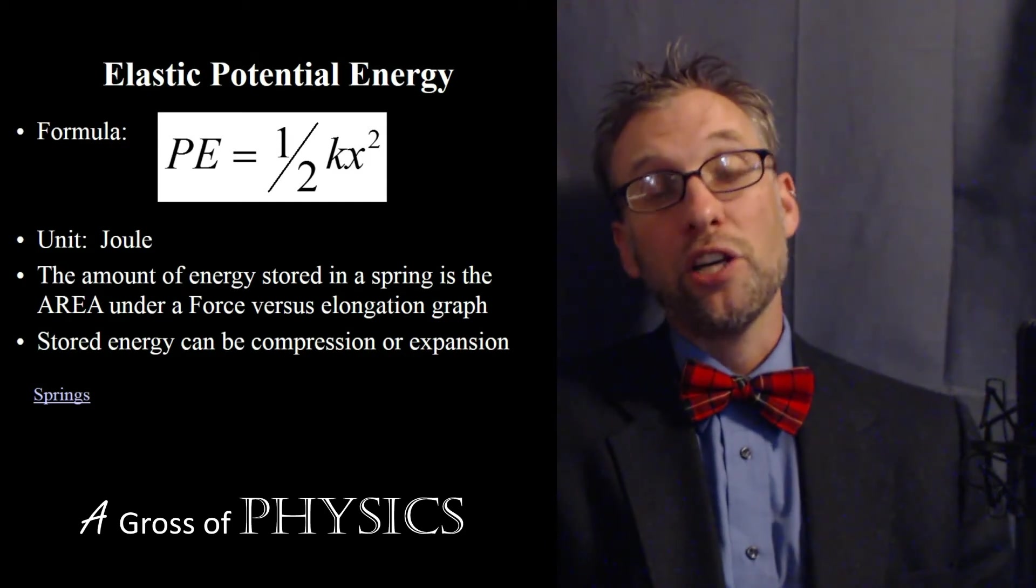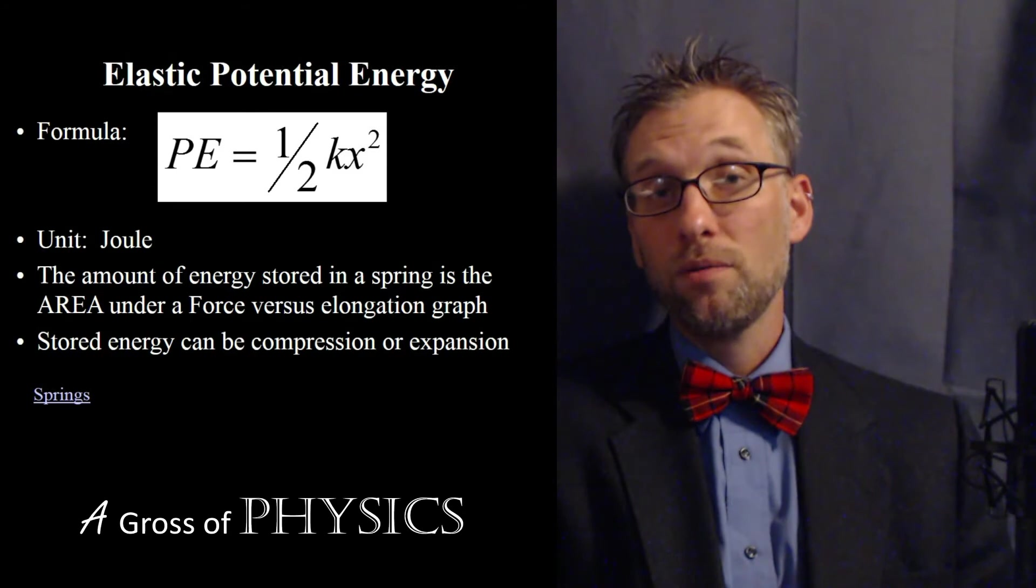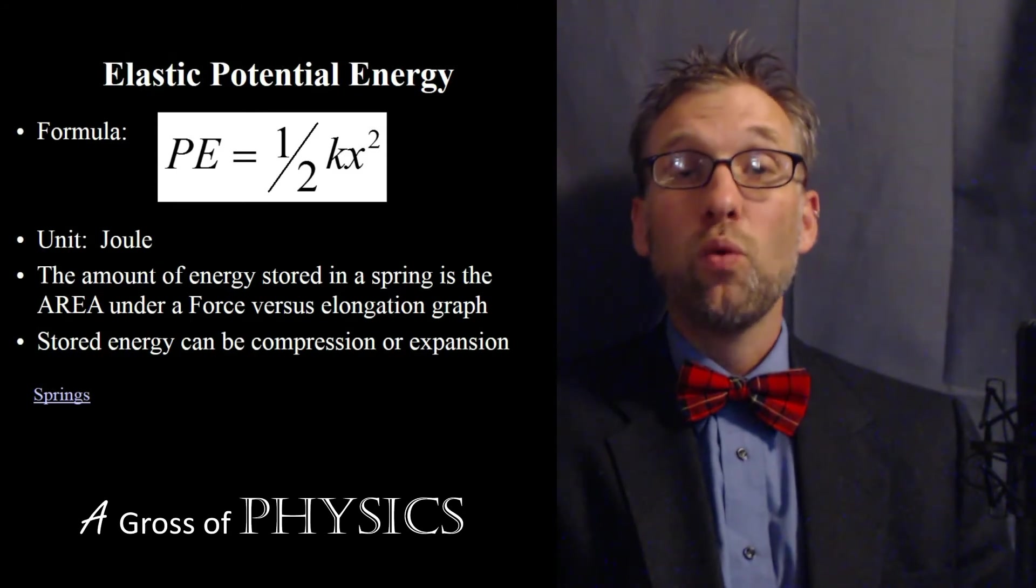So the equation for elastic potential energy is simply one-half kx squared. So we have two different types of potential energy: gravitational, mgh, or elastic, which is one-half kx squared.